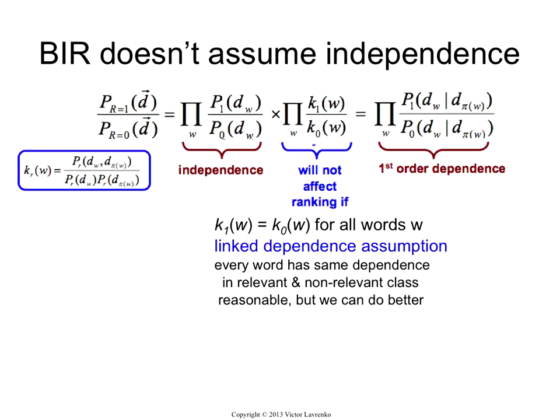But do we have to assume that they're equal to 1? No, we don't. What we need is just that they be equal to each other. If k1 is bigger than 1 — positive dependence between the terms — and k0 is also bigger than 1 by the same amount, as long as they're the same, they will cancel out and will not affect the ranking. This means we don't have to assume that the word is independent of the parent. All we have to assume is that the word is as dependent on the parent in the relevant class as it is in the non-relevant class. So Barack and Obama could be correlated in the relevant class, and as long as they're correlated by exactly the same amount in the non-relevant class, the factors will not matter and will not affect the ranking.